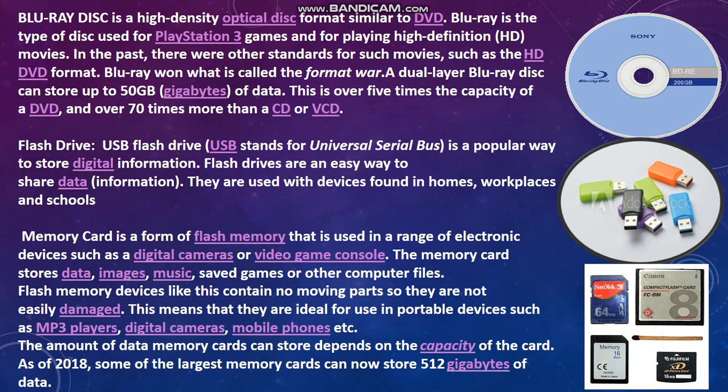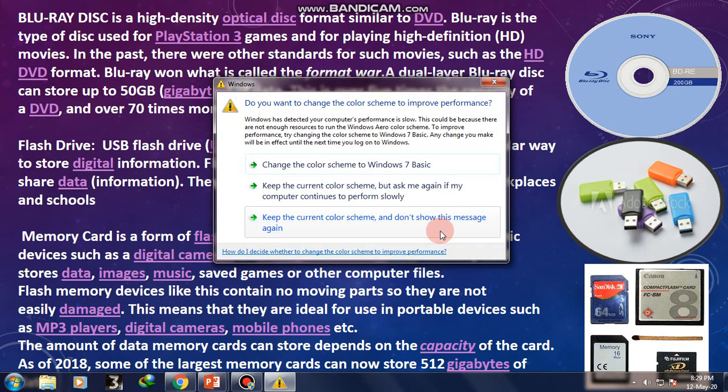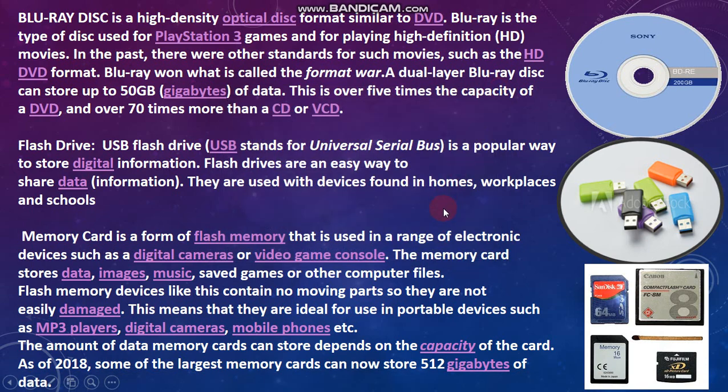Last is the memory card. You can easily see a memory card on your mobile phone or digital camera. A memory card is a form of flash memory that is used in a range of electronic devices such as digital cameras or video game consoles. The memory card stores data, images, music, saved games, or other computer files. Flash memory devices like this contain no moving parts, so they are not easily damaged, meaning they are ideal for use in portable devices such as MP3 players, digital cameras, and mobile phones. The amount of data a memory card can store depends on its capacity. As of 2018, some of the larger memory cards can now store 512 gigabytes of data.